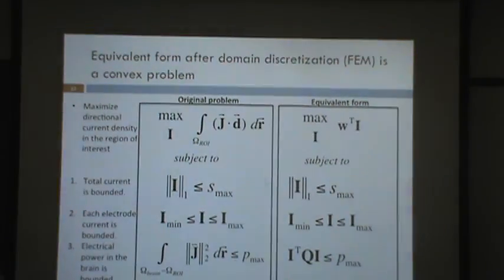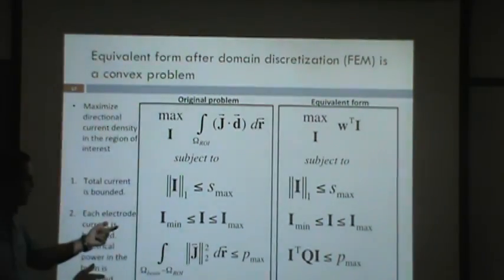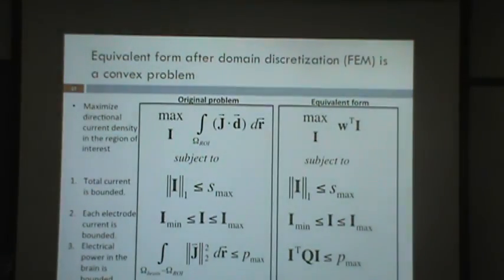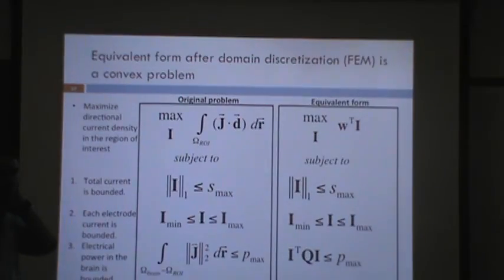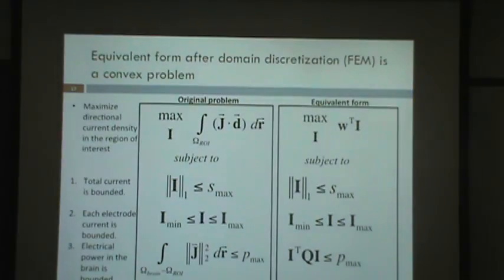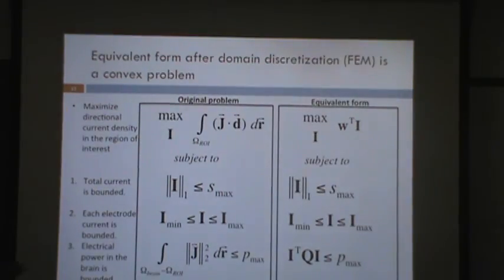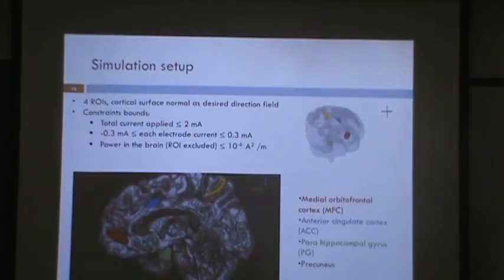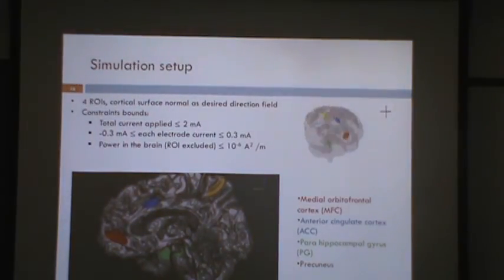After domain discretization, our problem becomes the one shown here. It is a very simple problem — the number of unknowns is just the number of electrodes. It is a convex problem with a linear objective, one quadratic constraint, and some box constraints, making it very easy to solve. We solved this problem using general convex solvers implemented in MATLAB.